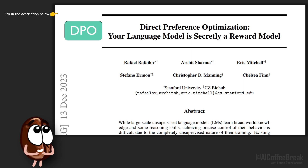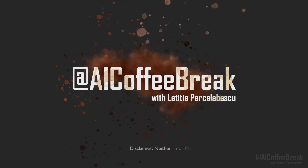This DPO paper was a runner-up for this year's NeurIPS Outstanding Paper Award. What is RLHF and why do we usually fine-tune LLMs with it? How does DPO work such that we can fine-tune directly from human feedback without reinforcement learning? This is what we will explain in this video.